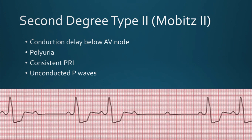A second degree type 2 AV block occurs due to a conduction failure in the His-Purkinje system. This is considered a high-degree AV block, characterized by intermittent non-conducted P waves without prolongation of the PR interval — there is no variation in the PR interval. There is an excessive amount of P waves, so polyuria is noted, but there is no 'longer, longer, drop' pattern. Every QRS is preceded by a P wave with the same PR interval as those before and after it. Some P waves simply have no QRS. This is your second degree type 2, or Mobitz 2.